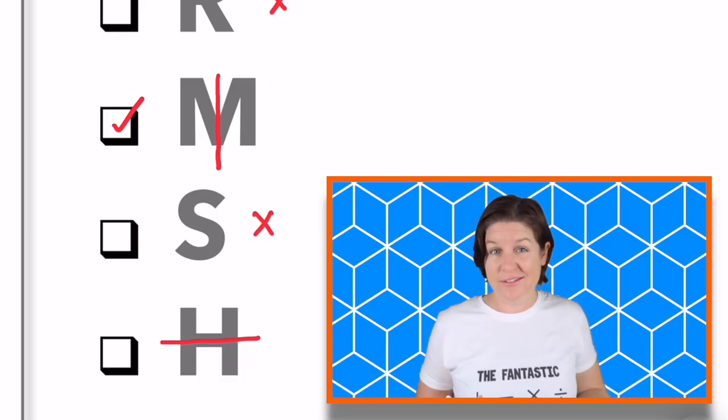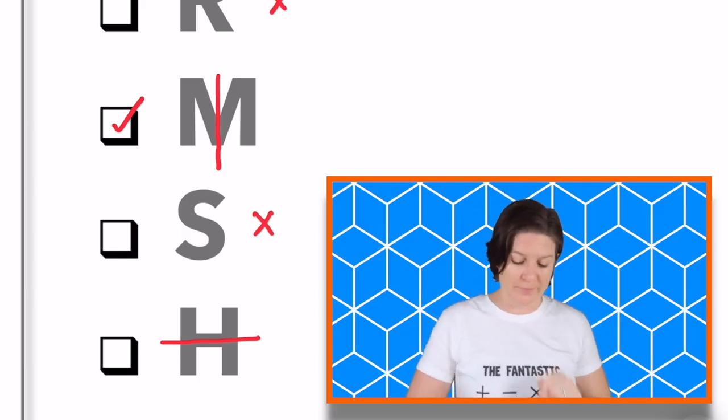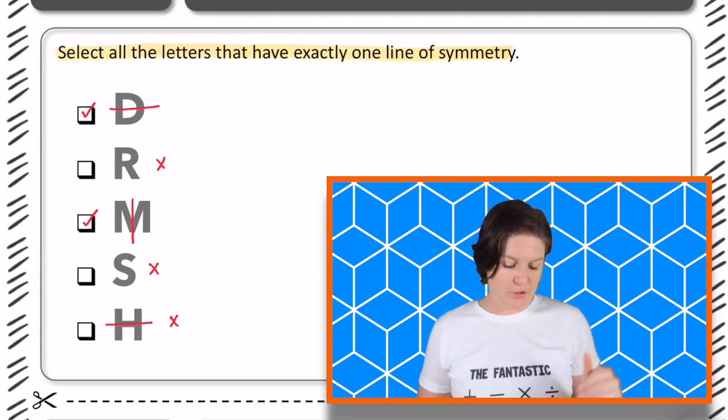Which means, can we select this answer? No, because we're looking for answers that have exactly one line of symmetry. And H has two, so we can eliminate that one. So your answers are D and M, the first and third choice.